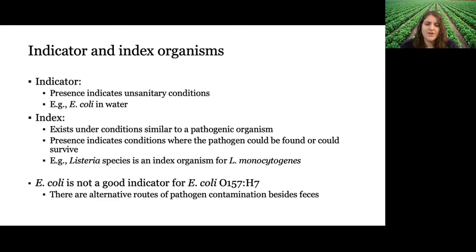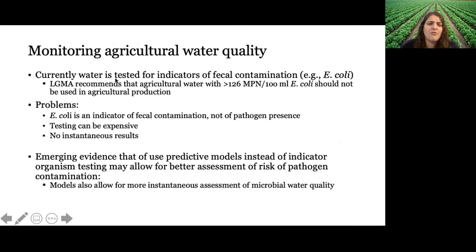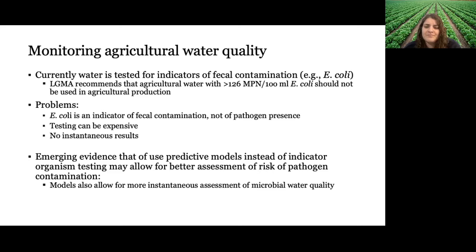Currently, agricultural water quality monitoring tests for E. coli as an indicator of fecal contamination. LGMA recommends that agricultural water with greater than 126 MPN per 100 mL of E. coli should not be used. But the problem is that E. coli presence might not be well correlated with pathogen presence — you may have less than 126 MPN per 100 mL of E. coli in your ag water but still have E. coli O157:H7 present, meaning your water might not actually be safe to use.